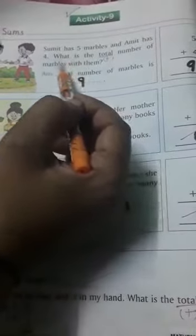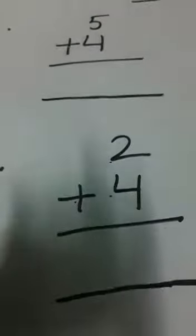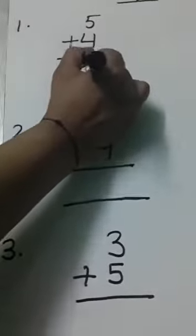Total number of marbles with them. We need to find how many marbles they have together. Sumit has 5 marbles, Amit has 4 marbles. What is the total number of marbles? Total means plus. 5 plus 4, the answer is 9.